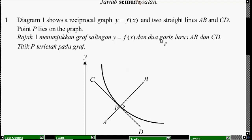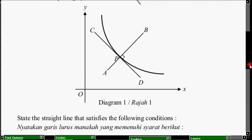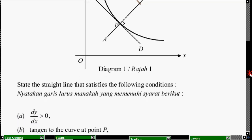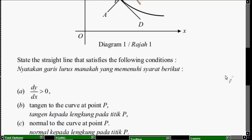A, B dan C, D. Titik P terletak pada graf. Titik P terletak pada graf tersebut. Iaitu, ni graf, ni gambarnya, rajahnya. Okay, state the straight line that satisfied the following condition. So, mana satu, kita kena pastikan garis lurus tu lah. Ada dua je.